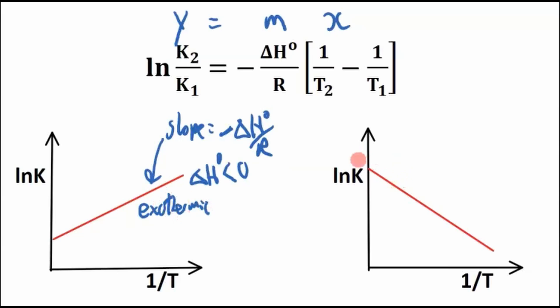And if this is a negative slope, that means our heat of the reaction has to be greater than 0. This is a negative slope, so this would represent an endothermic reaction.